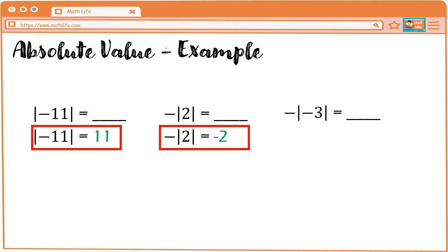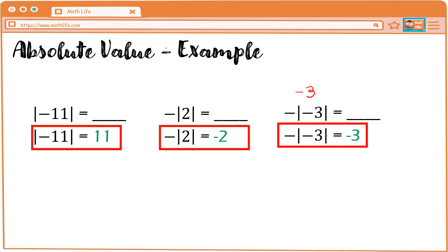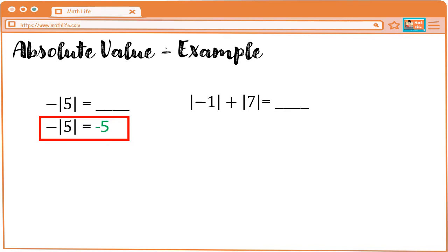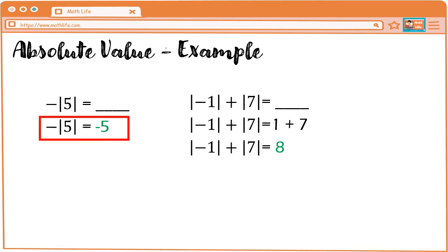Next, negative of the absolute value of negative three is equal to negative three. Bakit siya naging negative three? Kunin natin yung absolute value of negative three — that is positive three. Since meron tayong negative sa labas, kaya magiging negative three. Next, we have negative of absolute value of five, equal siya sa negative five. Next naman, we have absolute value of negative one plus the absolute value of seven. Kunin muna natin yung absolute value ng dalawang number: absolute value of negative one is one, absolute value of seven is seven. So, one plus seven, the answer is eight.